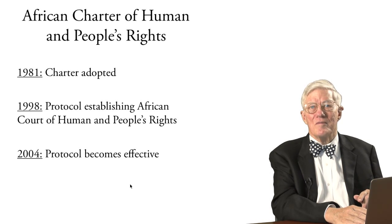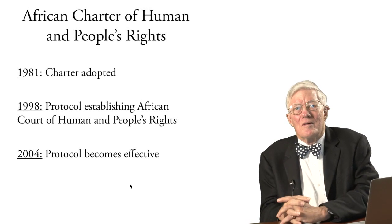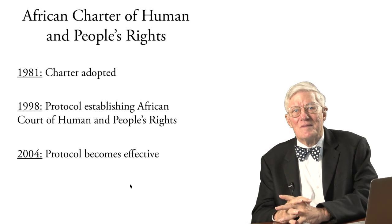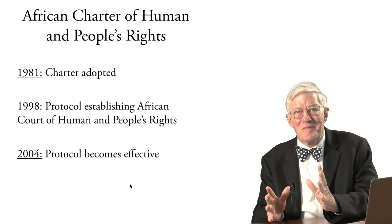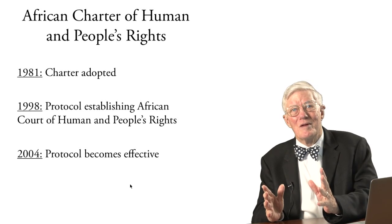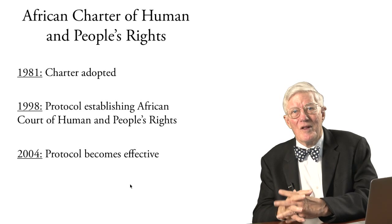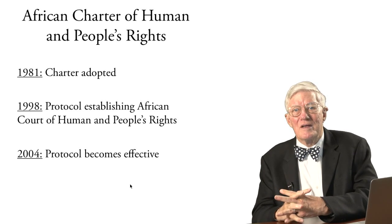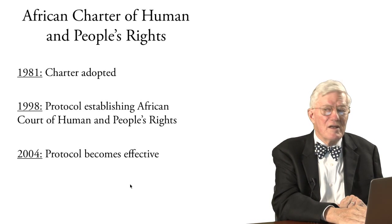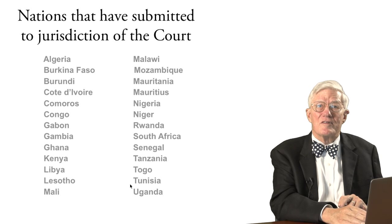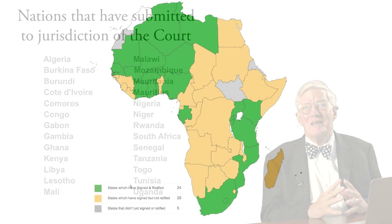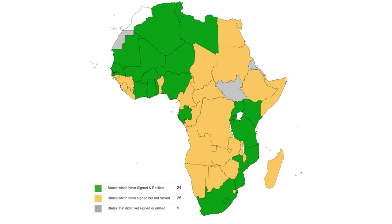In 1981 the African Charter on Human and People's Rights was adopted — note the chronology: the charter was adopted before the court was in place. A protocol establishing the African Court of Human and People's Rights was adopted in 1998, and became effective in 2004. About 26 nations had submitted to the jurisdiction of the court as of 2013, and looking at the map, a number of those nations are around the southeastern coast of Africa, while significant nations in Central Africa have not submitted to this jurisdiction.